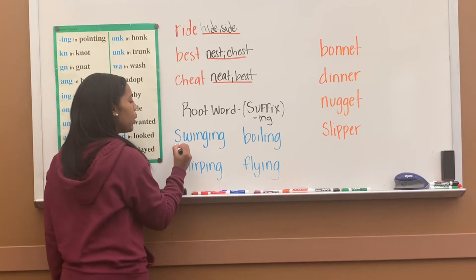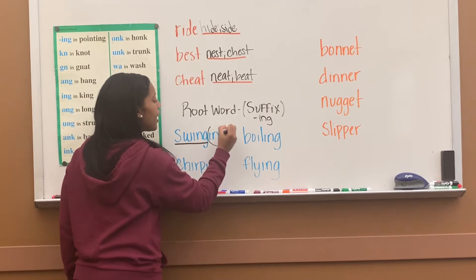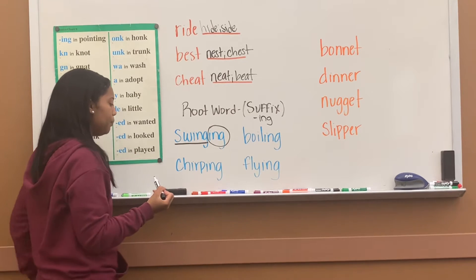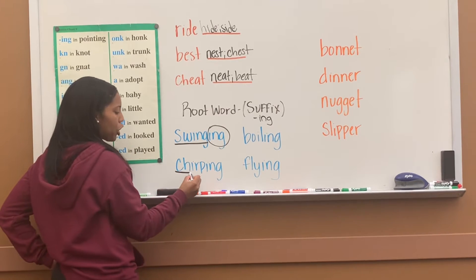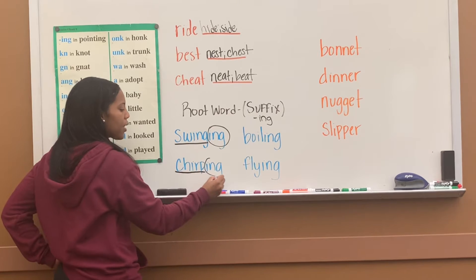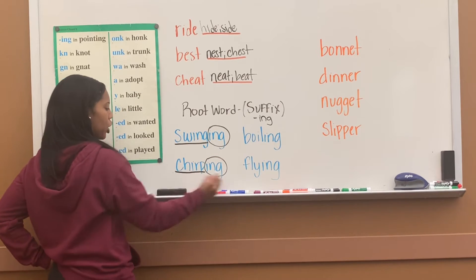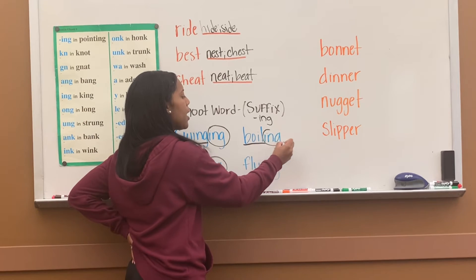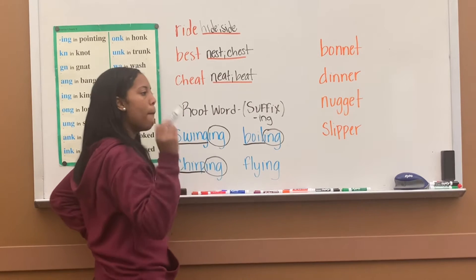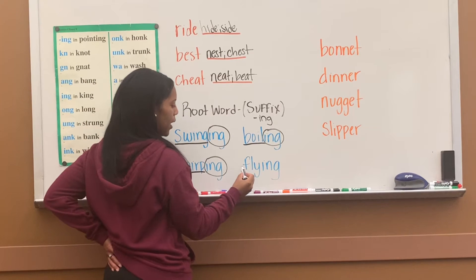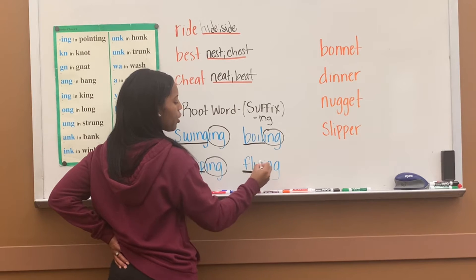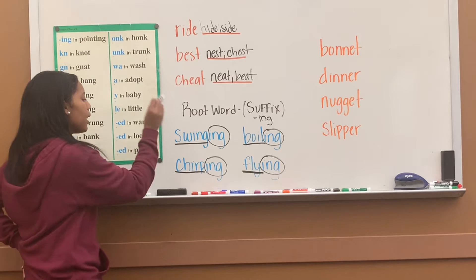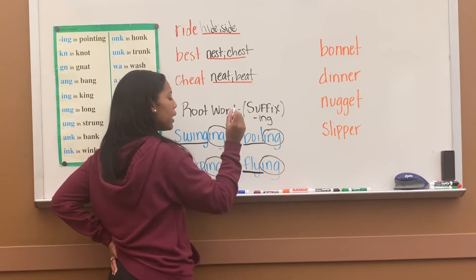Underline the root word 'swing,' circle the suffix -ing — the word is 'swinging.' Underline the root word 'chirp,' circle the suffix -ing — the word is 'chirping.' Underline the root word 'boil,' circle the suffix -ing — the word is 'boiling.' Underline the root word 'fly,' circle the suffix -ing — the word is 'flying.' Swinging, chirping, boiling, flying.